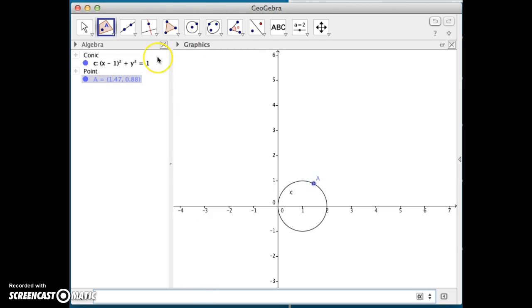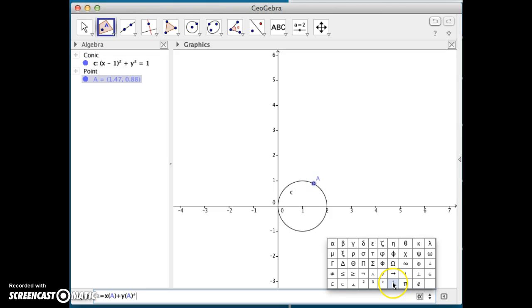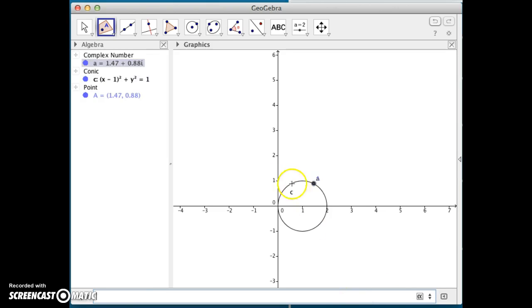and then this point is given in rectangular coordinates. I would like a complex number with those coordinates, and so I'll type down here in the input bar, A equals the x-coordinate of point A plus the y-coordinate of point A times that imaginary unit i, which is right here. And now, that point A is at the same location as the rectangular coordinate A, so this coordinate plane, this Cartesian plane, has now become a coordinate plane for the complex numbers as well.